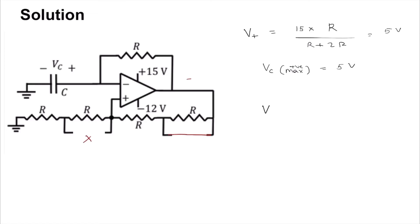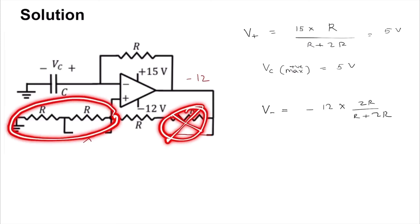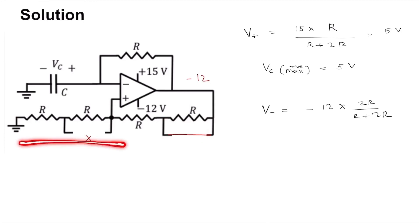Well, you will get that V minus is now going to be same voltage division. V out is minus 12, so this is minus 12 times 2R by R plus 2R, because now this resistor is bypassed and you have this resistor responsible for the drop here.